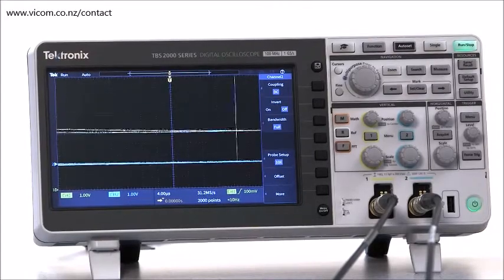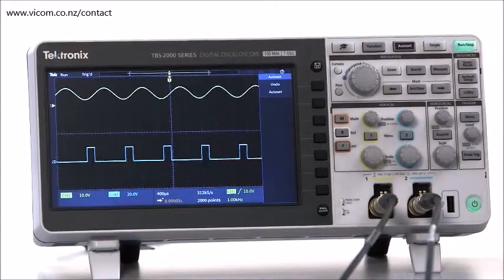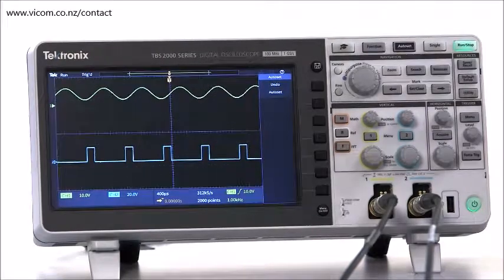Sometimes you can get away with cheating thanks to AutoSet. It uses the processing power in the scope to try and fit signals in the display. But you're not off the hook. Every engineer needs to know how to set up probes and how to make manual oscilloscope adjustments.